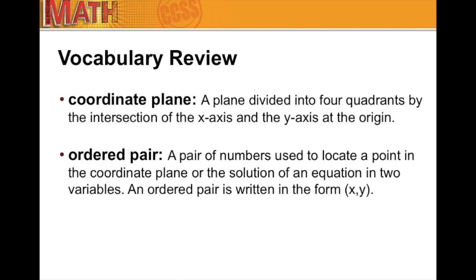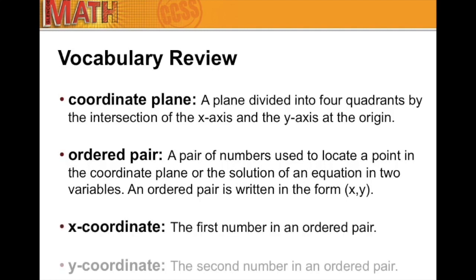An ordered pair is written in the form (x, y). For right now, we are not going to be looking at the solution-of-an-equation portion in this unit; however, keep it in your definition. The x-coordinate is the first number of an ordered pair; the y-coordinate is the second number of the ordered pair. Make sure you hit pause and get these copied down.